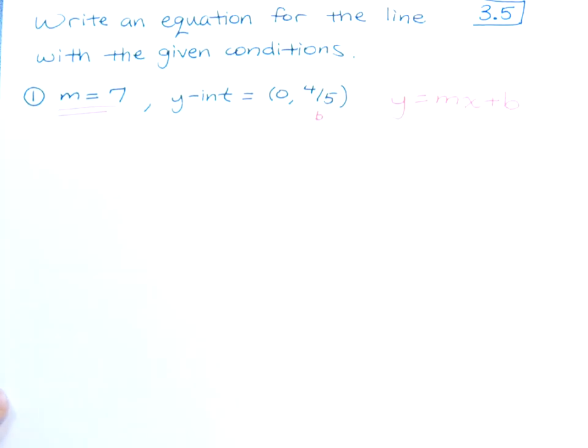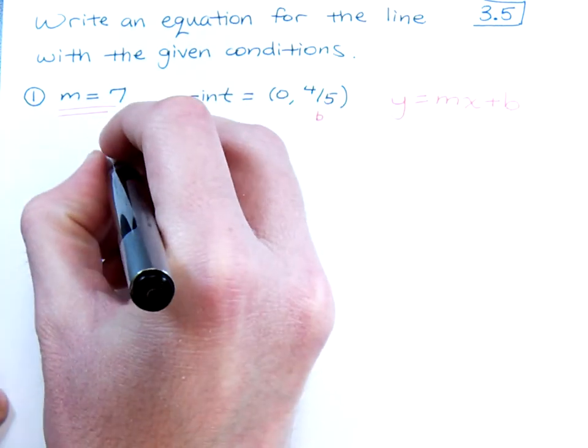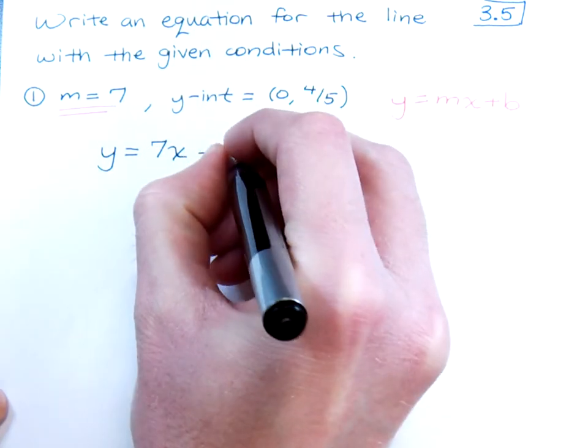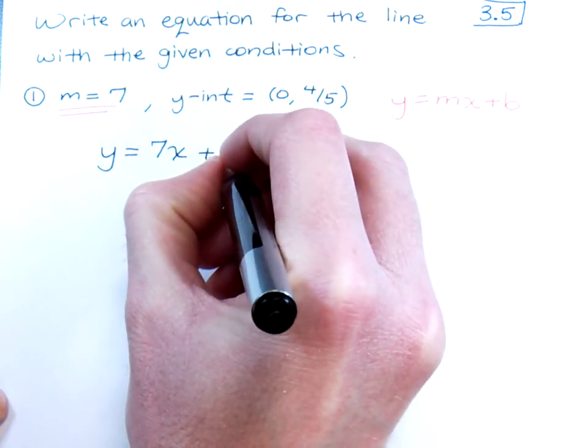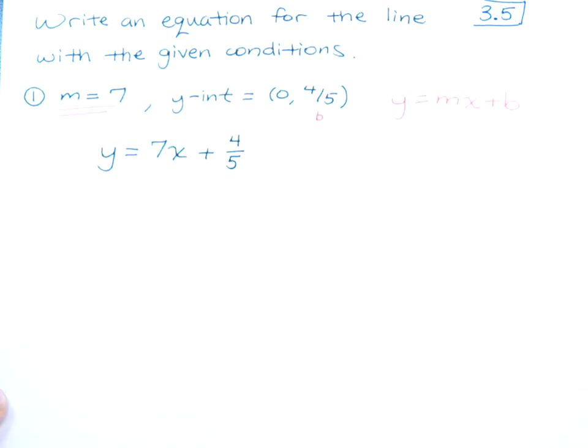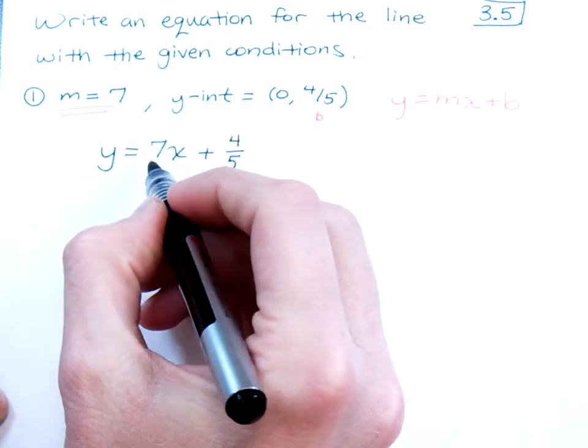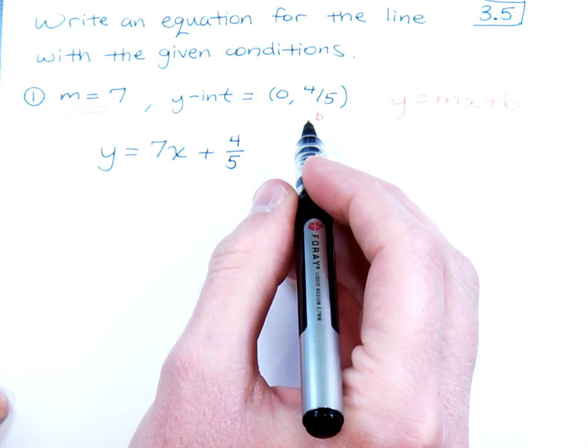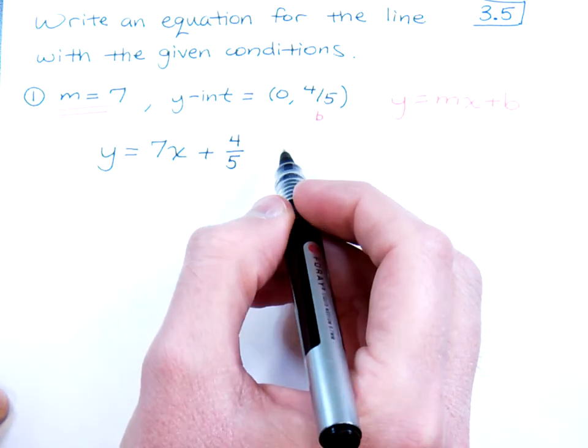So the equation that we're going to write for this is simply y equals 7x plus 4/5. Now if we look at this, I hope it's easy to see that you have a slope of 7, and you also have a y-intercept that would give you 0, 4/5.